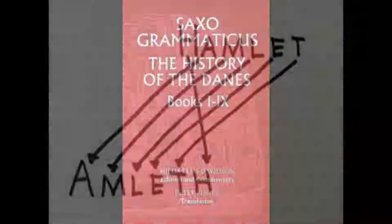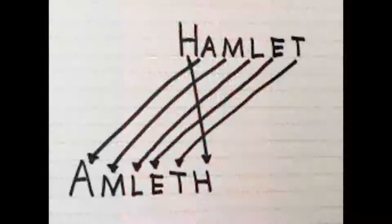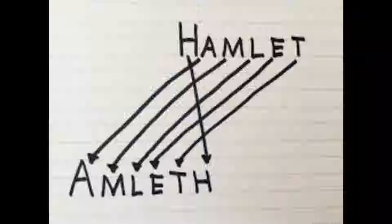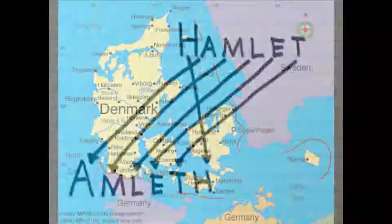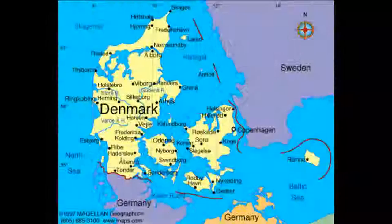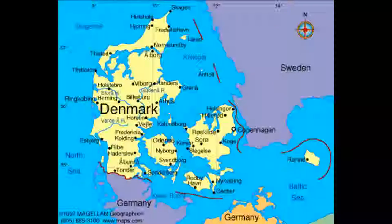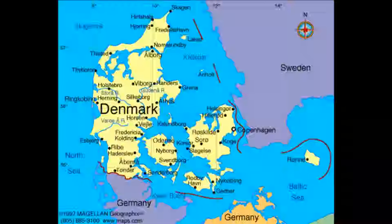Shakespeare derives his inspiration for Hamlet from the particular tale of Amleth. In Saxo's version, two brothers, Orvendil and Fengi, are appointed to rule over Jutland in Denmark. Orvendil weds the king of Denmark's beautiful daughter, Geruth, and has a son, who they name Amleth.